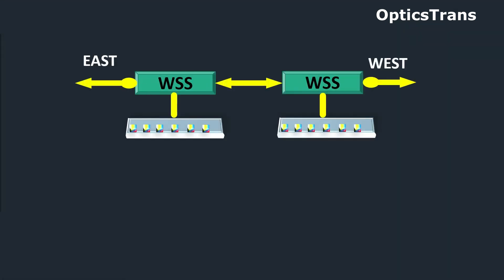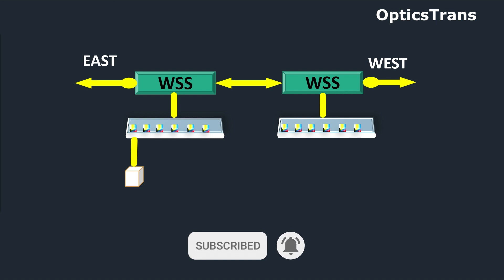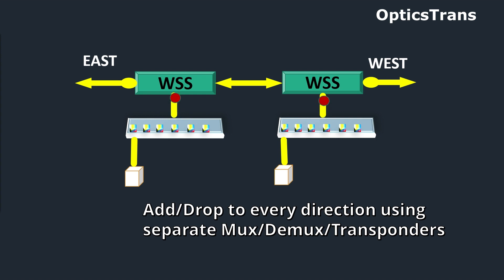This site has east and west directions. Let's assume we want to insert a red wavelength in the east direction and one in the west direction. This is possible using a legacy ROADM where one transponder is connected to the east mux-demux and another transponder is connected to the west mux-demux. The red wavelength can be added to every direction using separate transponders, and these wavelengths can be kept physically separate, so we can easily add and drop the same wavelength on the same site.